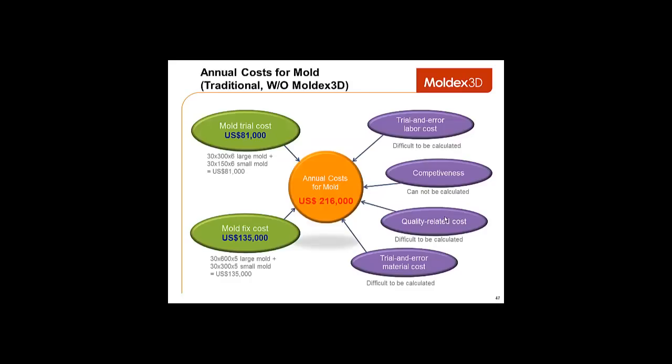Now, based on that previous slide, the annual cost for molds in total would be over $200,000, $216 to be exact. And that comes from mold trials and mold fix. In the purple boxes over here, you can see a breakdown of those two large costs. Now, while we're going through this, keep in mind that this is only a rough estimation for a mid-sized company.